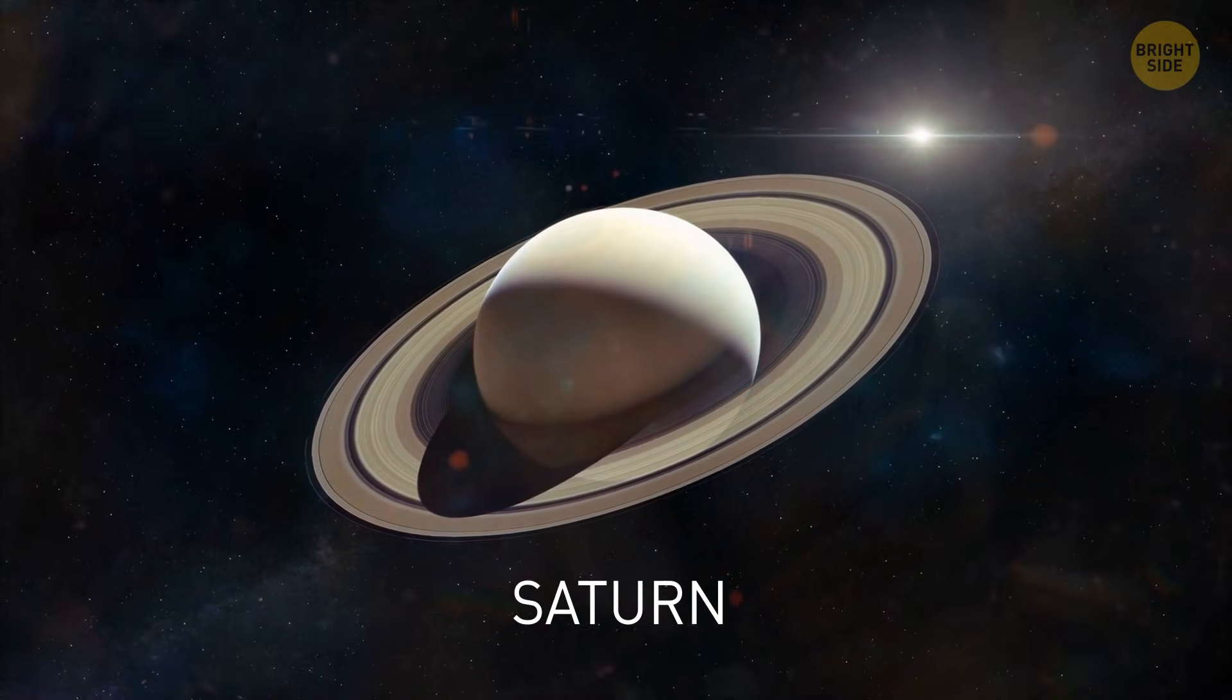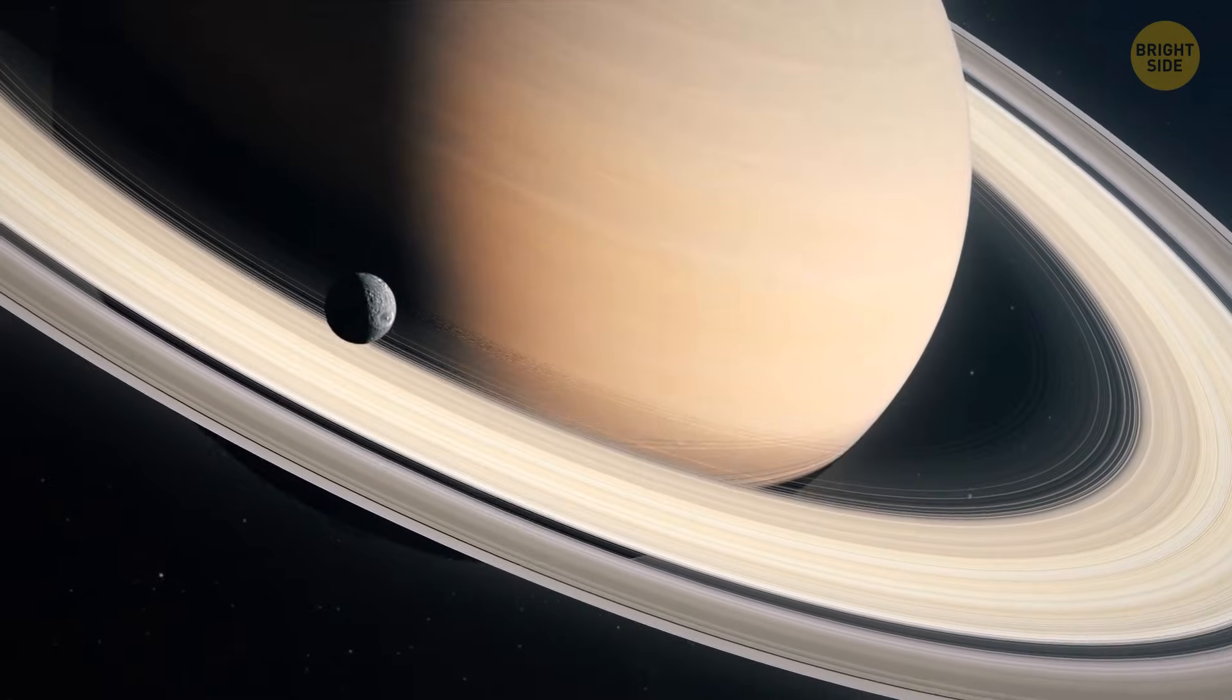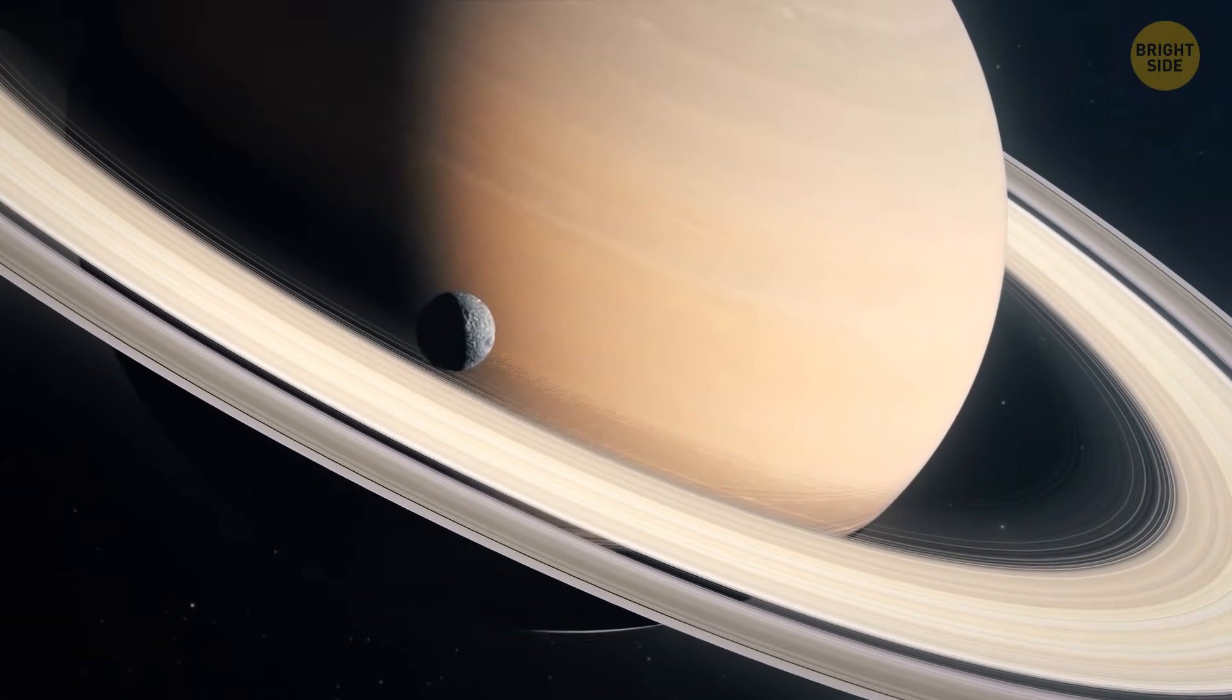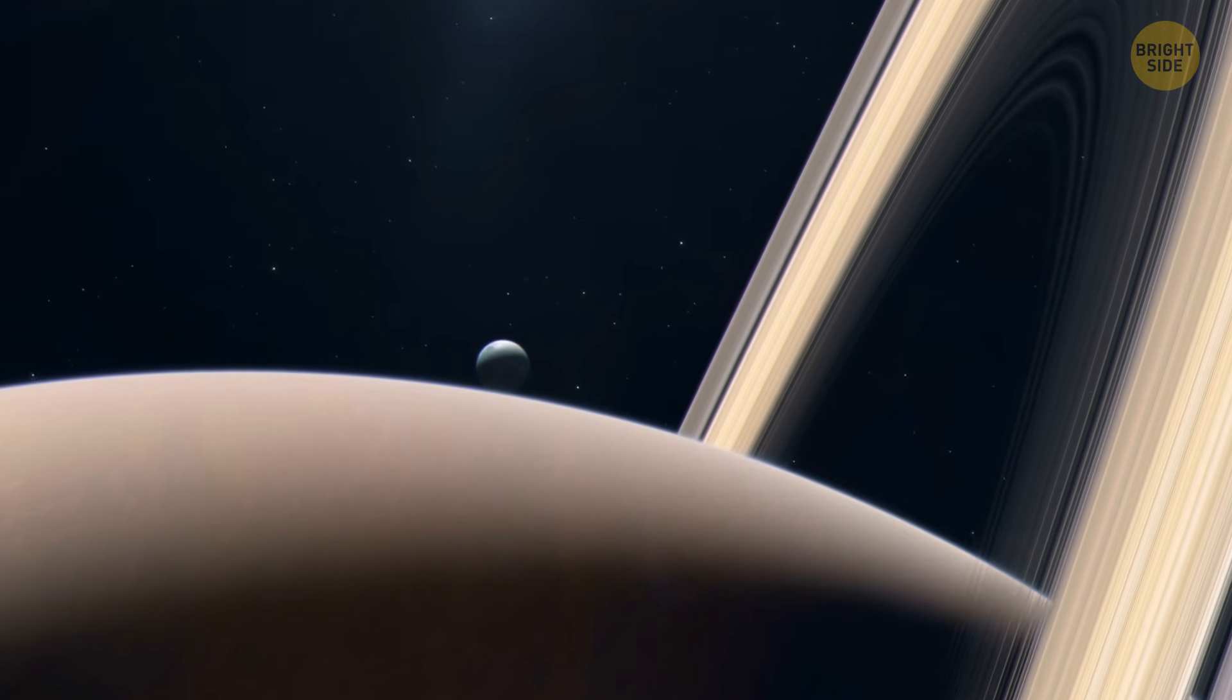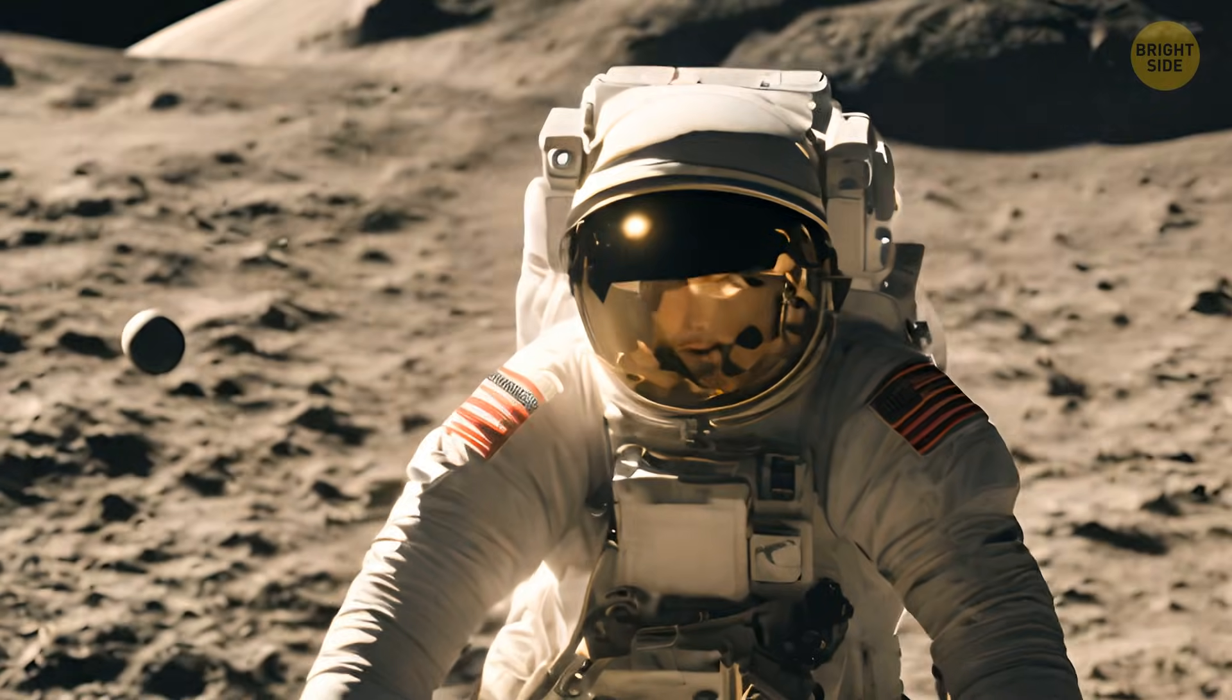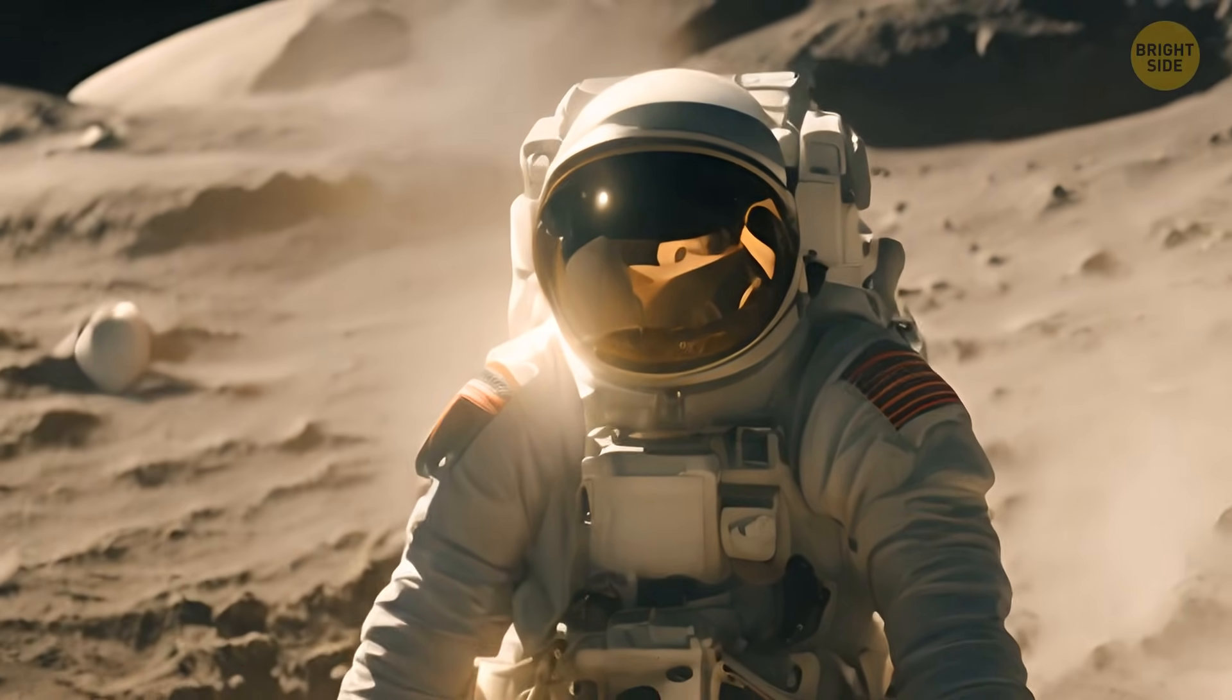The grand gas giant Saturn has a slightly more tilted axis than Earth. However, despite its elliptical path and tilt, it stays consistently chilly. That's because it's way out there, far from the Sun's warmth. Even though it's summer, Saturn remains distant and doesn't get too cozy.